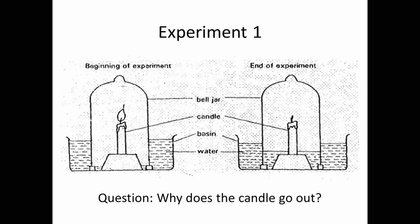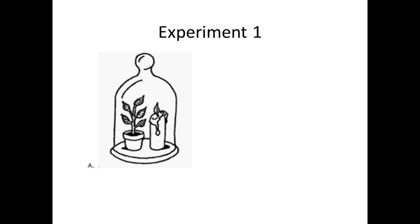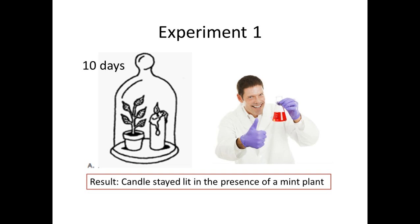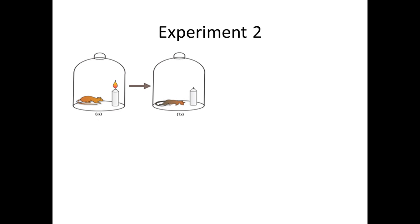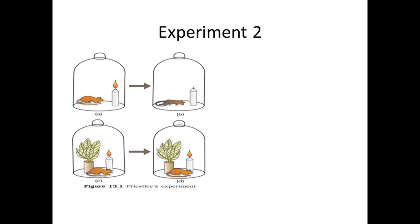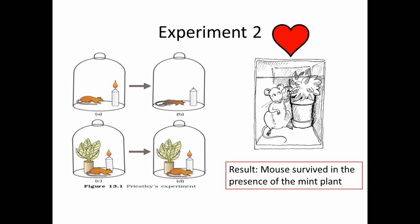So he thought, if the candle corrupts the air, let me try to improve it. He tossed a mint plant inside and lo and behold, the candle stayed lit for 10 days longer than before. The plant was doing something to the air to counteract the candle's effect. He then put a mouse in the bell jar — with the candle alone, the candle went out and the mouse died. But with a mint plant inside, the mouse survived and the candle stayed lit. He concluded the plant was counteracting the fire's effect on air and replenishing it for the mouse to use.